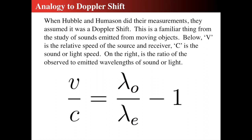Redshift is like a Doppler shift. They assumed that λ_observed compared to λ_emitted — if you do a ratio and subtract one from it, that's equal to the speed with which it's traveling away or toward us compared to the speed of light. You're simply asking how much different is the observed wavelength from the emitted. If it's not different, the recession speed is zero. If it's really different — say the observed is twice the emitted — you can have a very large redshift.